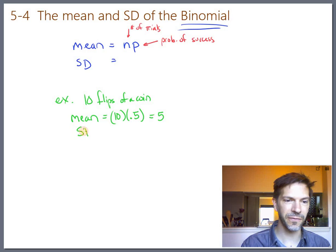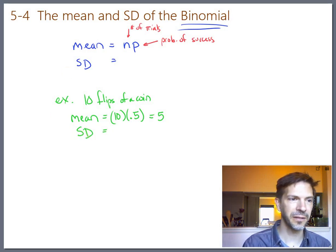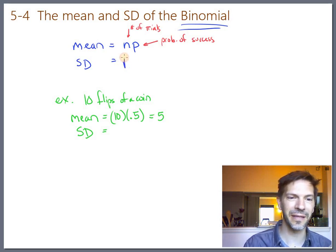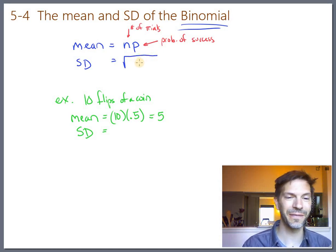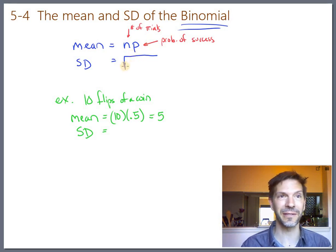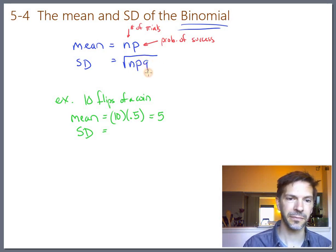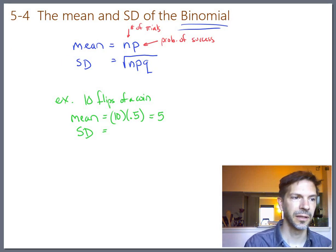The standard deviation formula is a little less intuitive, and I'm not going to prove it to you or anything. But I will just say that the standard deviation formula involves a square root. Since we know where standard deviations come from - squaring the deviations and then square rooting - maybe it's not a surprise that you get the square root in the formula. The formula is the square root of n times p times q. And q is our new letter.